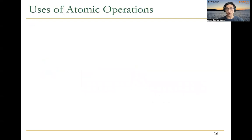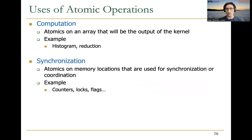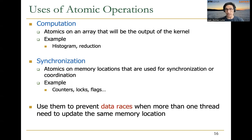Atomic operations are useful for different purposes. For example, for computation, when we use them on the array that is the output of the kernel — for example, in reduction as we discussed in the previous lecture, or in histogram calculation as we are going to do today. They can also be used for synchronization or coordination across different threads or thread blocks, for example using counters, locks, or flags. In the end, they are very useful to prevent data races when more than one thread needs to update the same memory location.